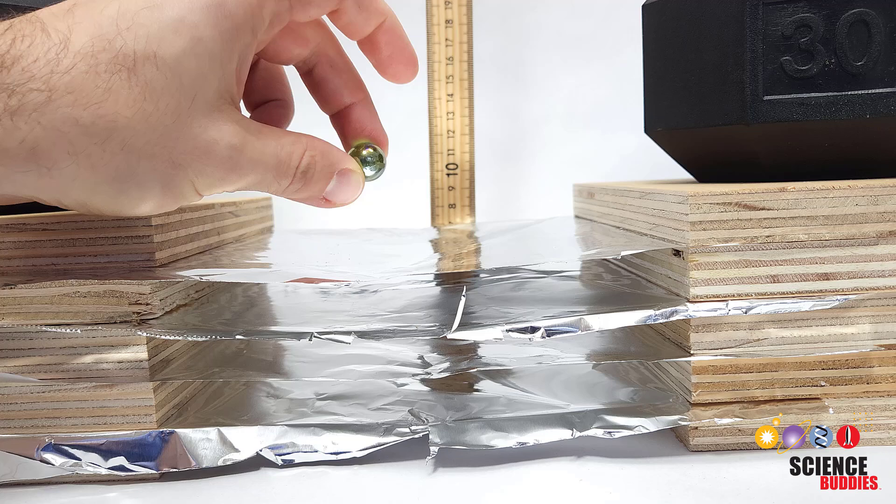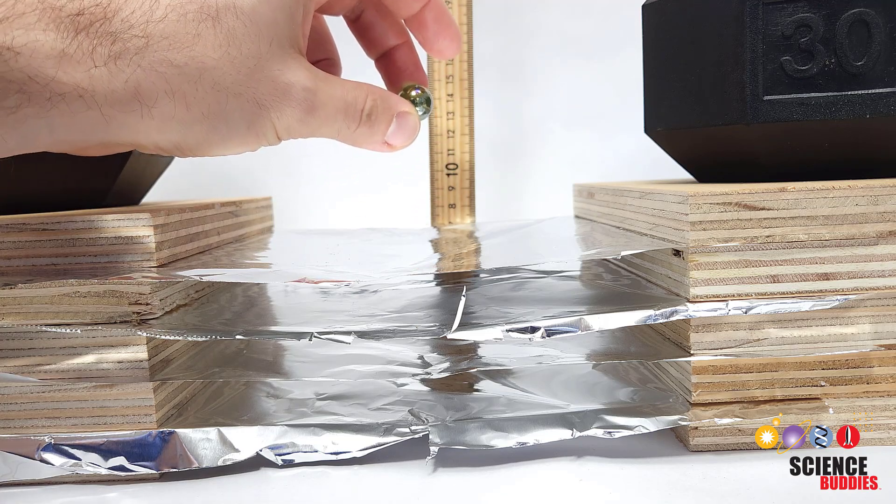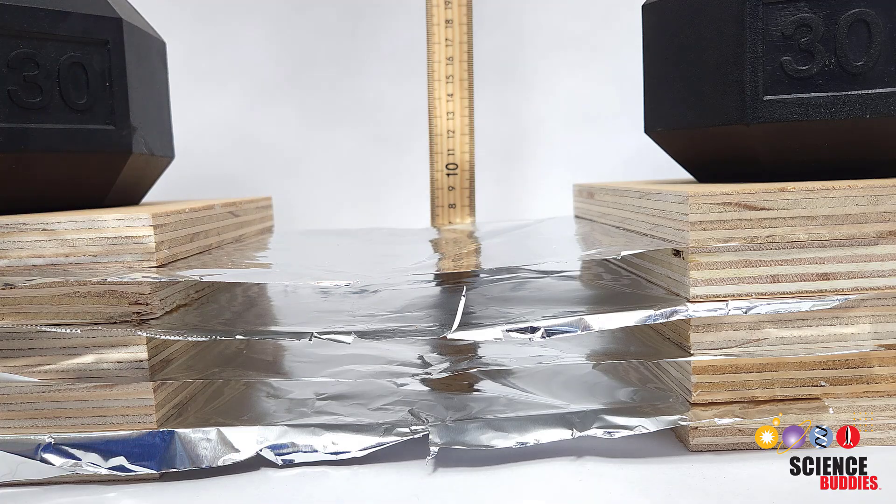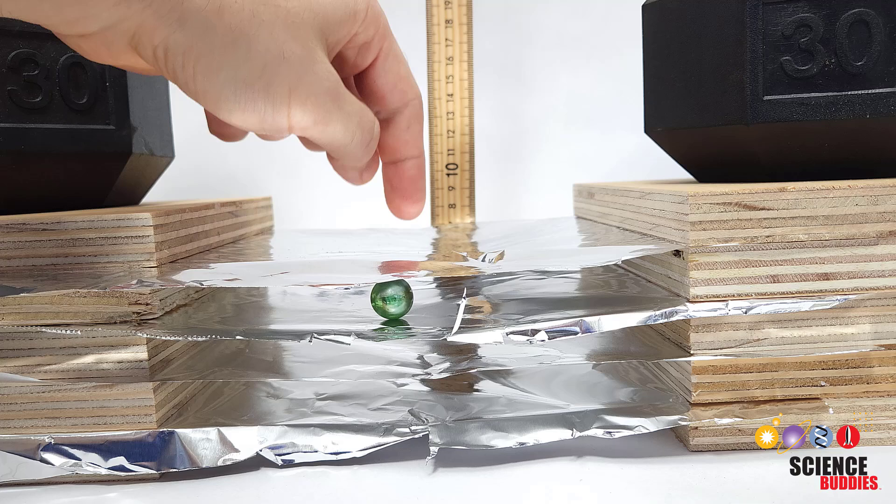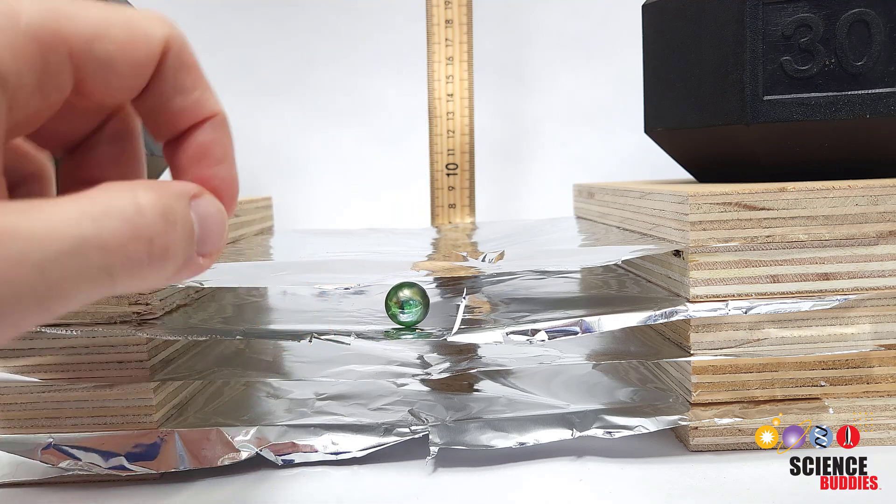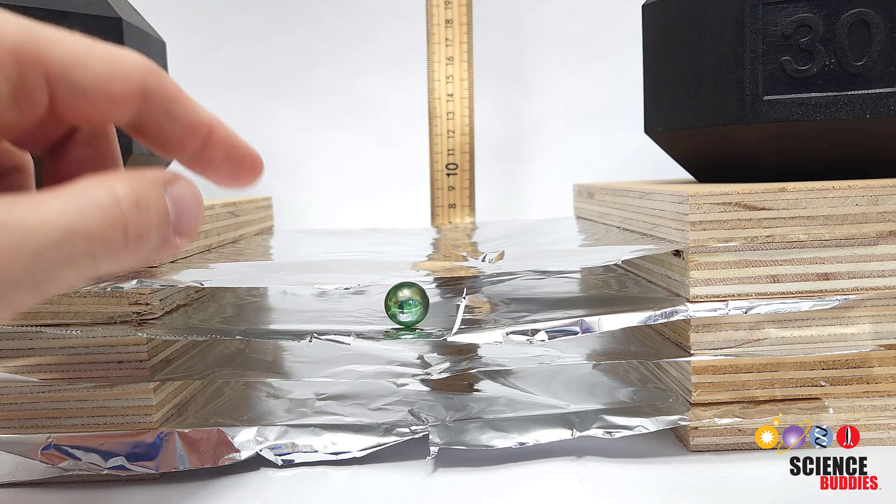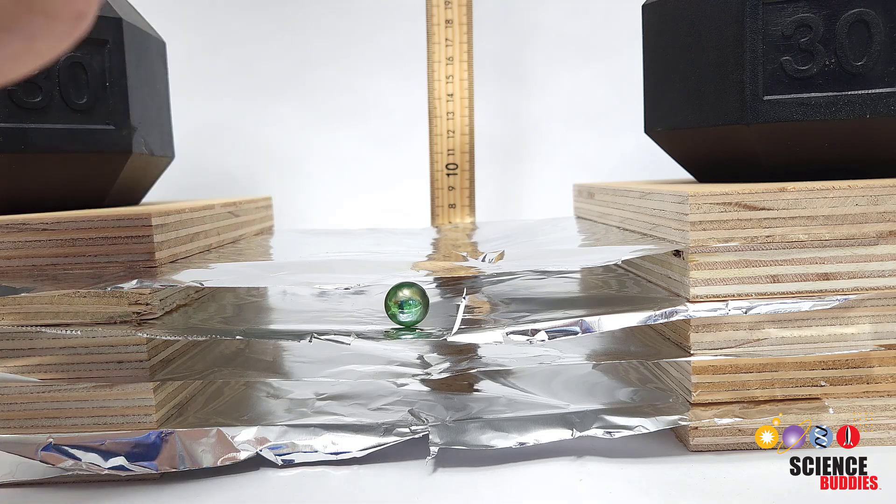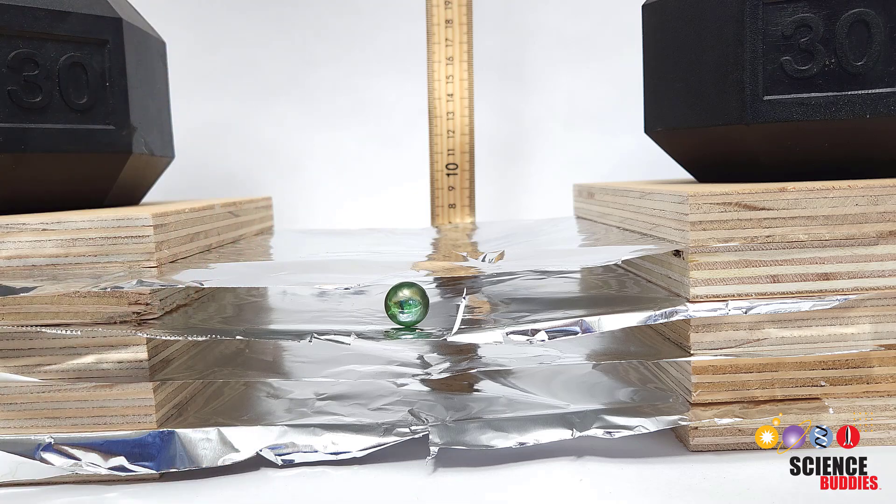After conducting three more trials from the same height, replacing the top sheet each time, I could move on to a higher height. I can see that that time the marble did punch right through the first layer and was stopped by the second layer. I could record this information in a data table, again repeating multiple trials at each height before moving up to the next height and replacing any damaged or punctured sheets in between each trial.